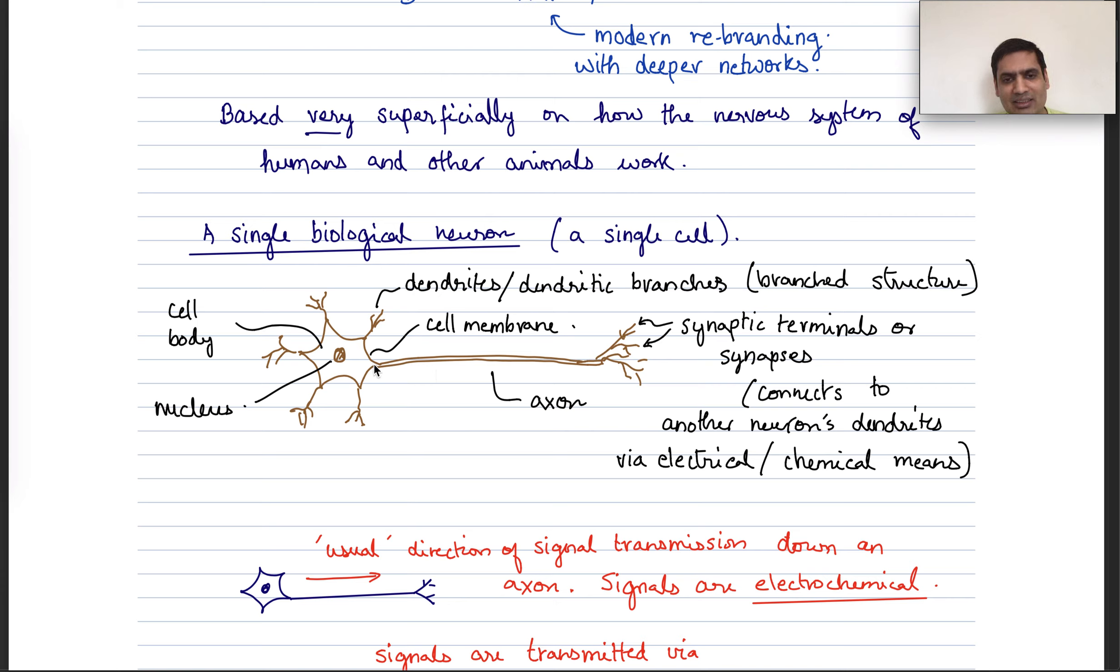And the cell has this long protuberance, this cable-like structure called the axon, which is like an electrical cable that communicates information over long distances, except in this case it is electrochemical. The cell body has these little protuberances called dendrites or dendritic branches. And then on this end of the axon, there are more branch structures which end in what are called synapses or synaptic terminals. These essentially connect to other neurons.